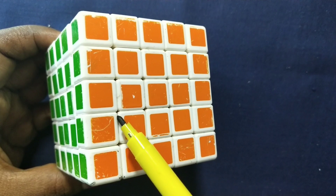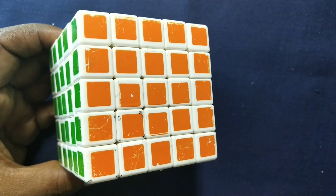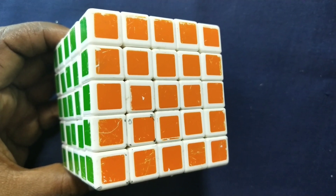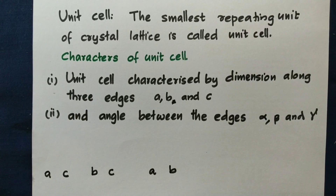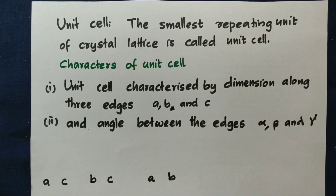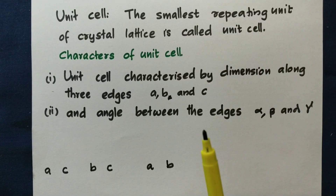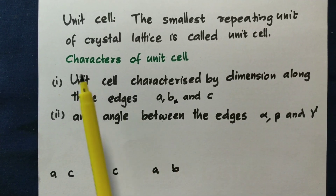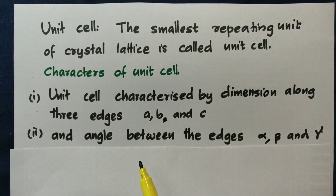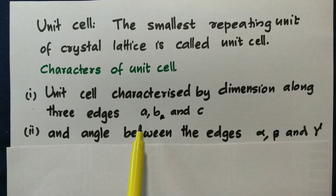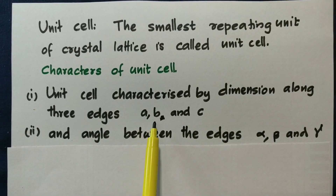The constituent particles at the lattice points can be ions, atoms, or molecules. Here is the crystal lattice — it keeps repeating a small portion by a unit cell. This is the smallest repeating unit. It has a length, breadth, and height — that means a cube with defined length and height dimensions.